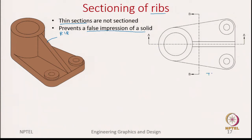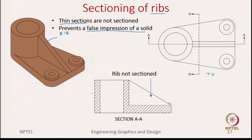Here is the top view showing the rib in two different sections: section AA and section BB. Section AA passes through the rib. According to the practice, even though it is passing through the rib, we do not show the section hatching. In section view AA, the rib is shown without hatchings. The reason is that once you show hatching, the reader feels there is a solid thick object being cut through. Since we are cutting through a thin rib and not a thick object, we avoid hatching to prevent confusing the readers.